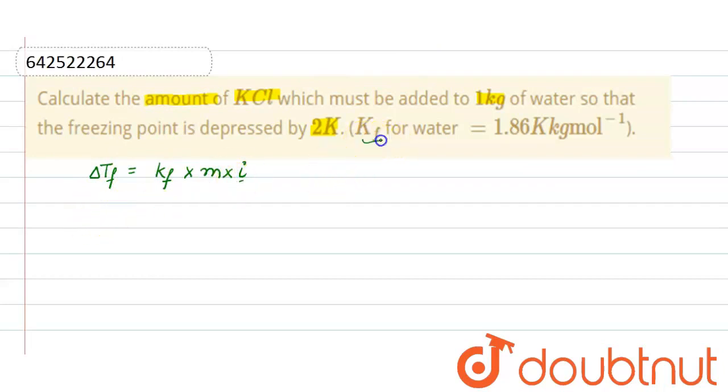So KF is given and ΔTF is also given, and van't Hoff factor for KCl, considering 100% dissociation, will be 2. We have to find out the amount.